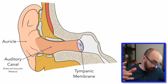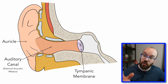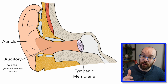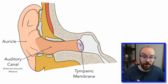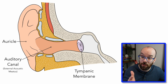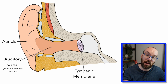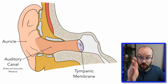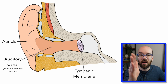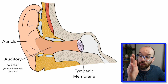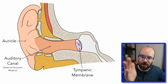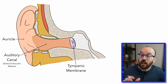The auricle funnels sound through the auditory canal, and those sound waves bounce up against the tympanic membrane. The tympanic membrane's job is to vibrate every time those sound waves hit it. So every sound you hear from this video is causing your tympanic membrane to vibrate — these in and out vibrations.